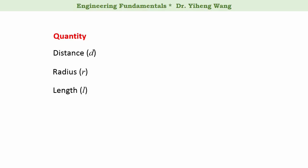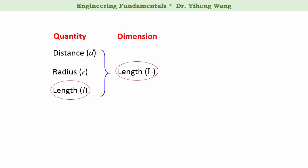These three concepts are different, but as you may know, they are all measured using the same property — length. And that is the dimension for all of these three quantities. You might notice here that length is both a quantity and a dimension, but distance and radius are not. This is because length is one of the seven base quantities, and it is used to define the dimension length.